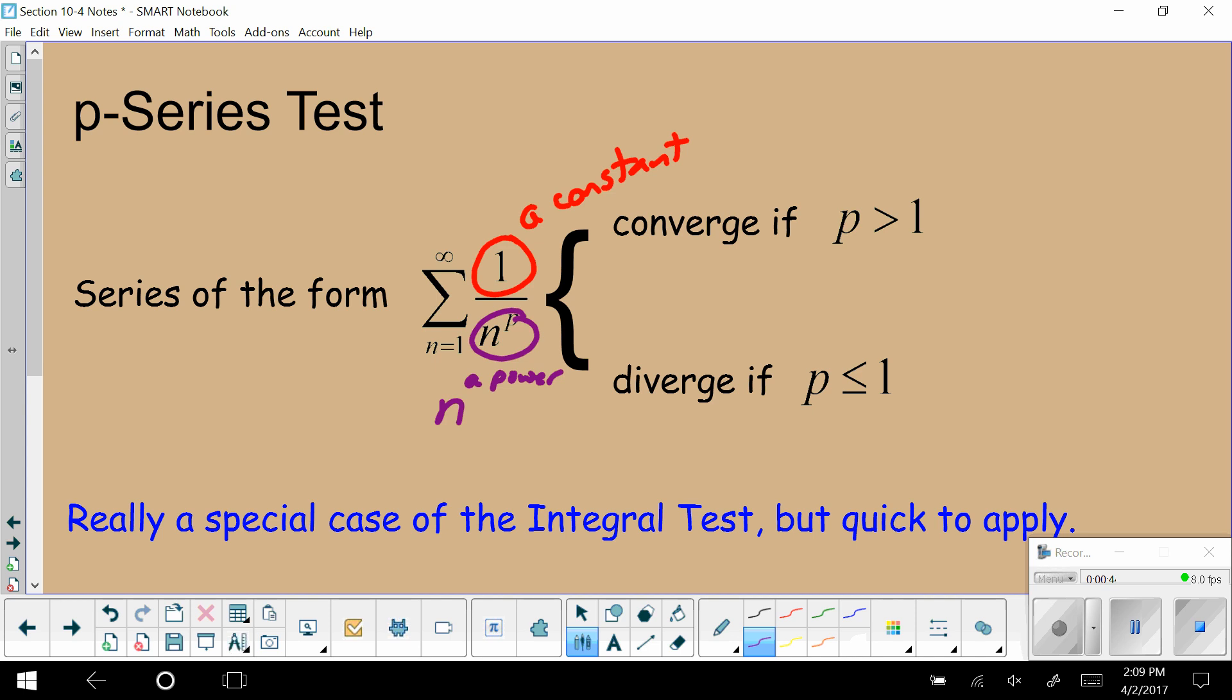What the p-series test says is that if this power is bigger than 1, our series converges. If this power is less than or equal to 1, our series diverges.